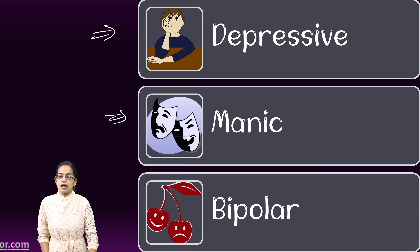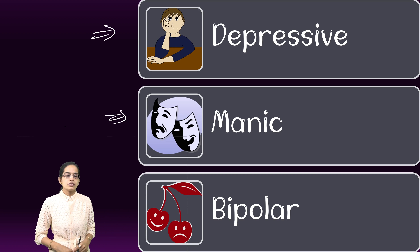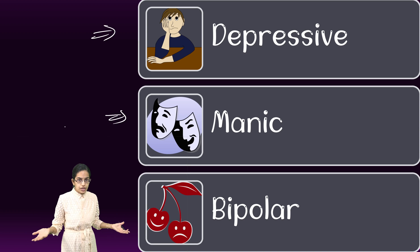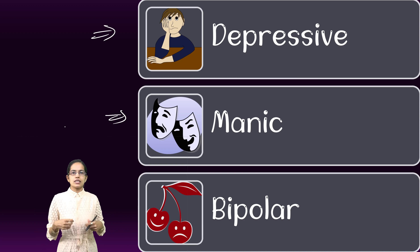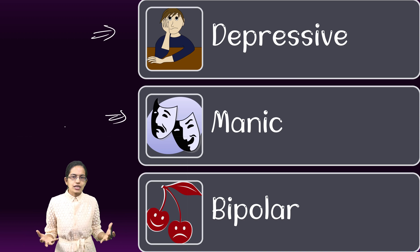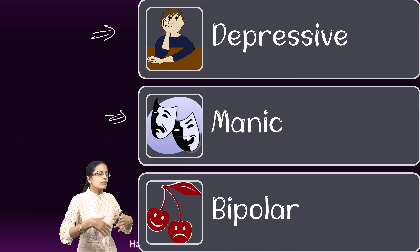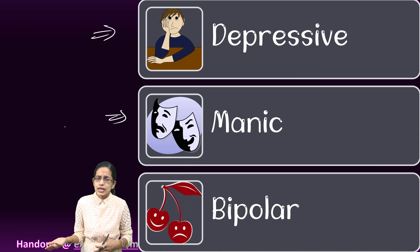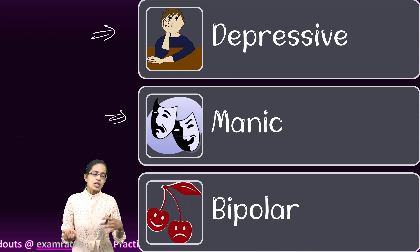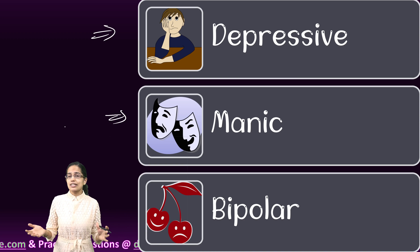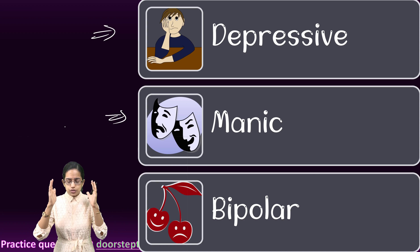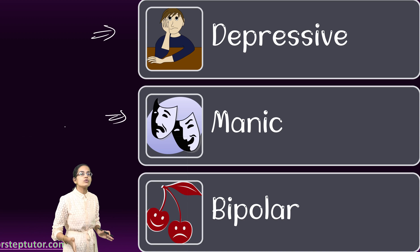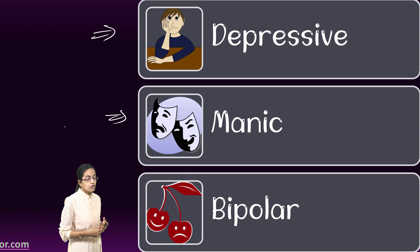Mania means a sudden euphoric happiness: increased activity, increased interaction, extreme talkativeness, being easily distractible, and having poor attention toward work. These are the symptoms of mania.